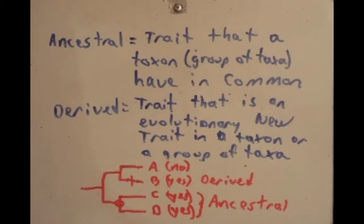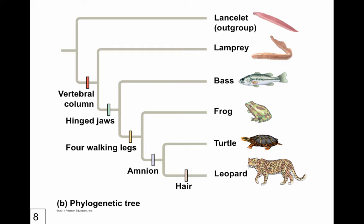Now I'm going to move to a PowerPoint slide to explain this using a different figure. Let's look at figure 26.12 from your textbook. In this figure, you'll see a group of taxa: Lancelet, Lamprey, Bass, Frog, Turtle, and Leopard. And then you'll see a list of characteristics: hair, amnion, four walking legs, hinged jaw, and vertebral column. When we look at these, we can say which ones are ancestral and which ones are derived.